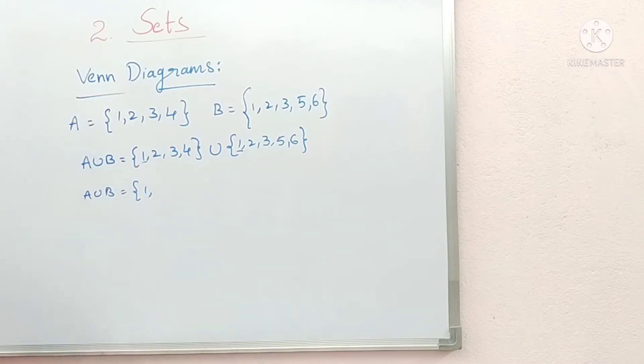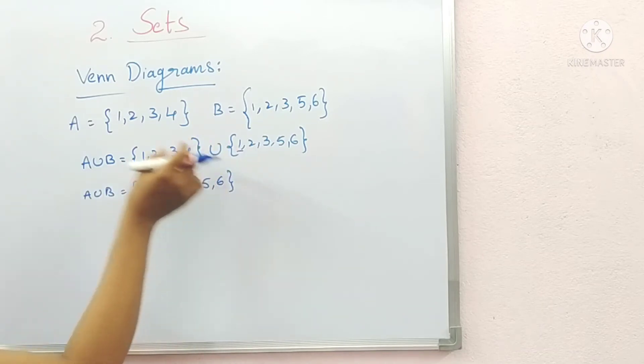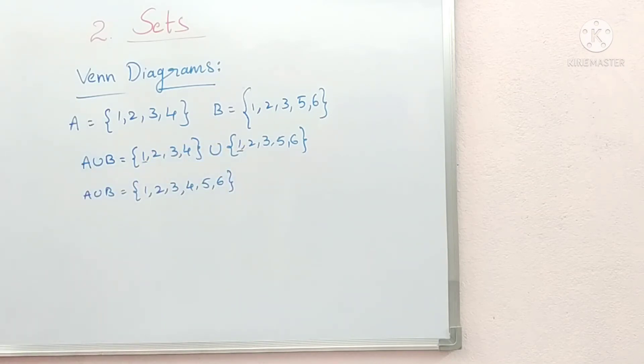Similarly, 2 only one time, 3 also one time, then 4, 5, 6. So all the elements should be covered both in A and B. A union B means...